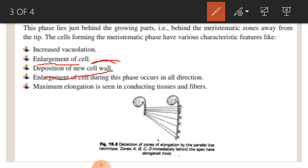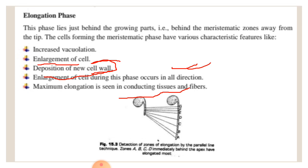During the elongation phase, there is enlargement of cells occurring in all directions, along with deposition of new cell walls. Maximum elongation is seen in conducting tissue and fibers, which show the greatest elongation during this phase.